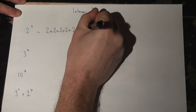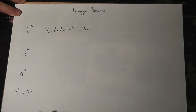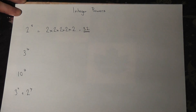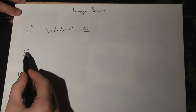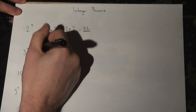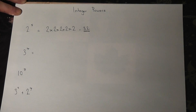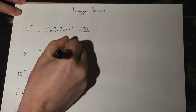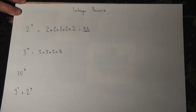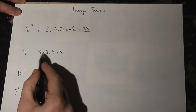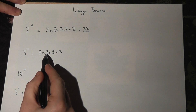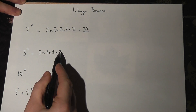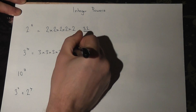And that's the answer. So if we have 3 to the power of 4, that is just 3 multiplied together 4 times. 3 times 3 is 9, times 3 is 27, and times 3 again is 81.